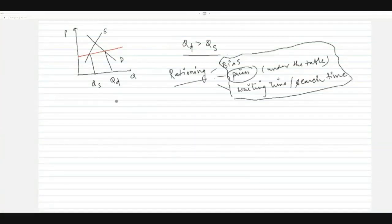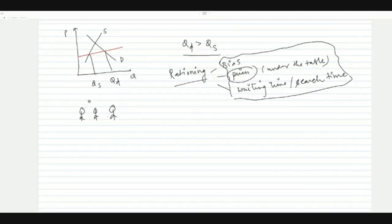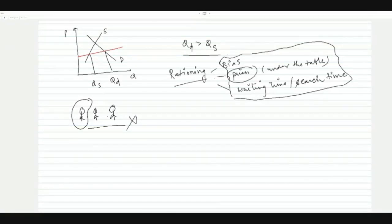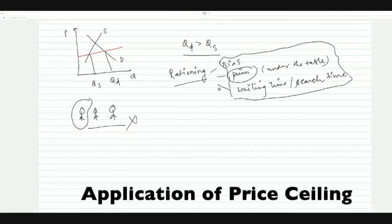So the purpose of this policy — to make the commodity affordable for buyers and ensure everyone can purchase it — is not being fulfilled. If there are many buyers in the market, this commodity is only available to selected people. Not everyone benefits; only selected people benefit, and even they receive the commodity after a lot of struggle. The government's price ceiling policy is not achieving its intended goal.